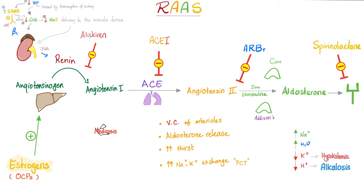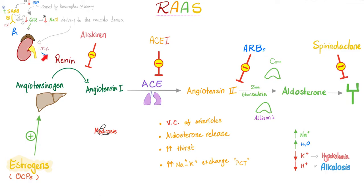Why do you call it angiotensin? Angio means vessel, tense means to constrict — I'm going to constrict vessels. And it's a protein in nature; -IN means protein. So angiotensin will constrict vessels and tend to raise blood pressure. Who converts angiotensinogen into angiotensin 1? Renin. Where does renin come from? From the kidney — specifically from the cells near the glomerulus, the juxtaglomerular cells, which are part of the juxtaglomerular apparatus.